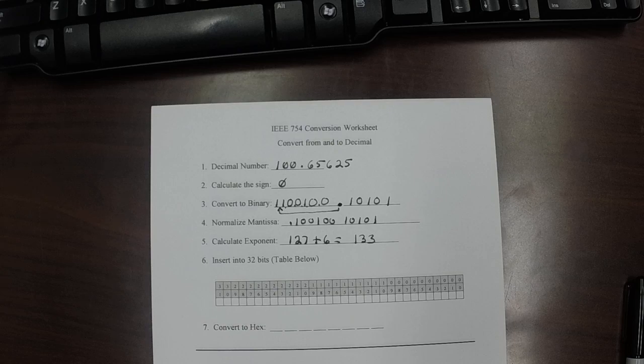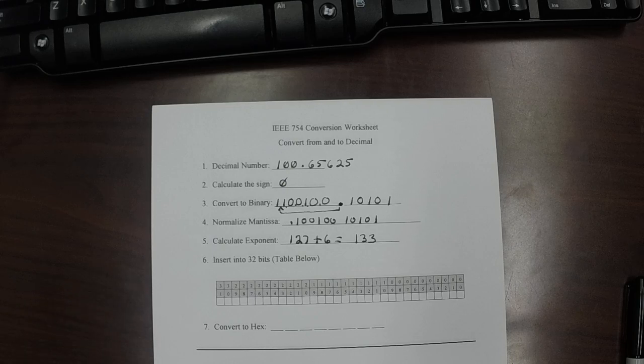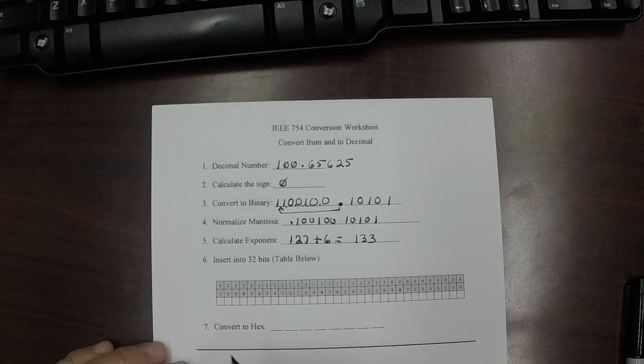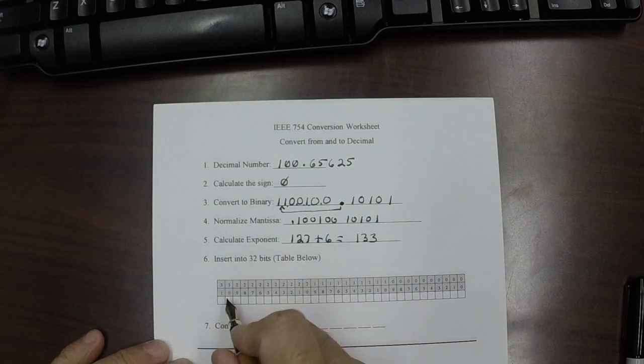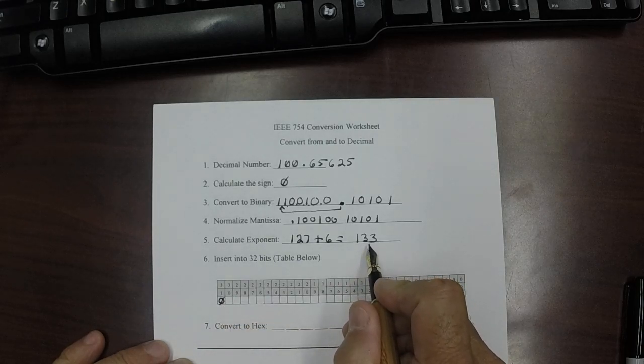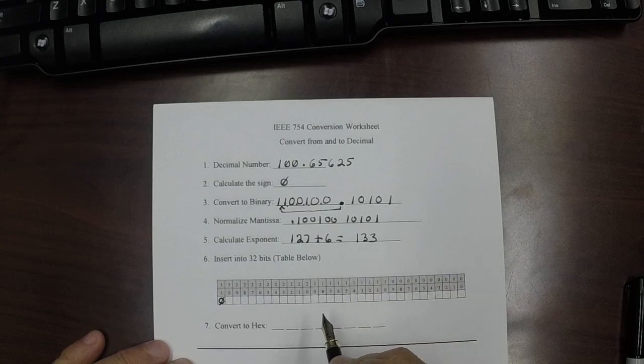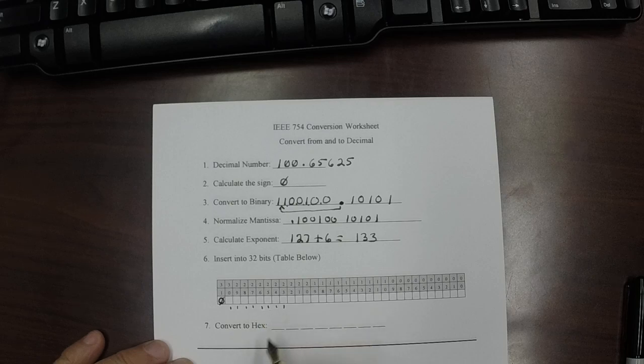So, now we have all of the information we need to actually convert the number into IEEE format. Well, let's go ahead and do that. The format of it is, the very first bit is the sign bit. Well, we know that, that's a zero. Now, the next 8 bits, what we want to do is we want to represent the number 133. 133 into 8 bits. So, this is the 8 bits right there. 1, 2, 3, 4, 5, 6, 7, 8.